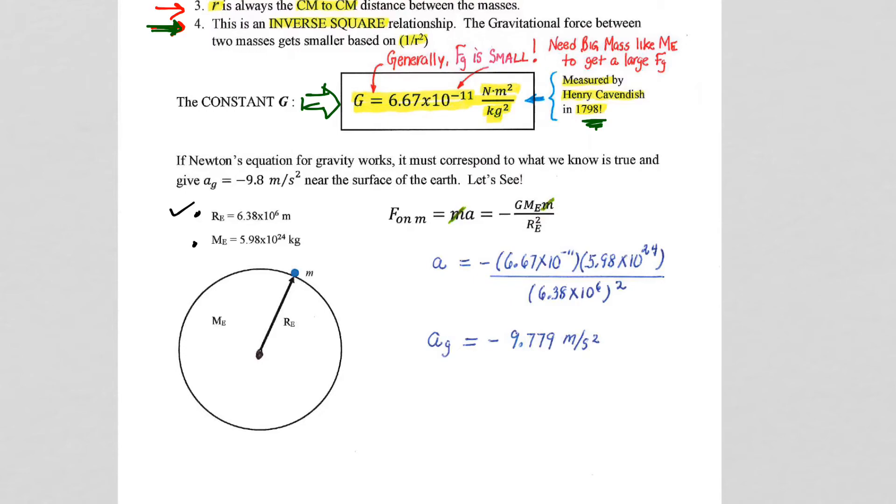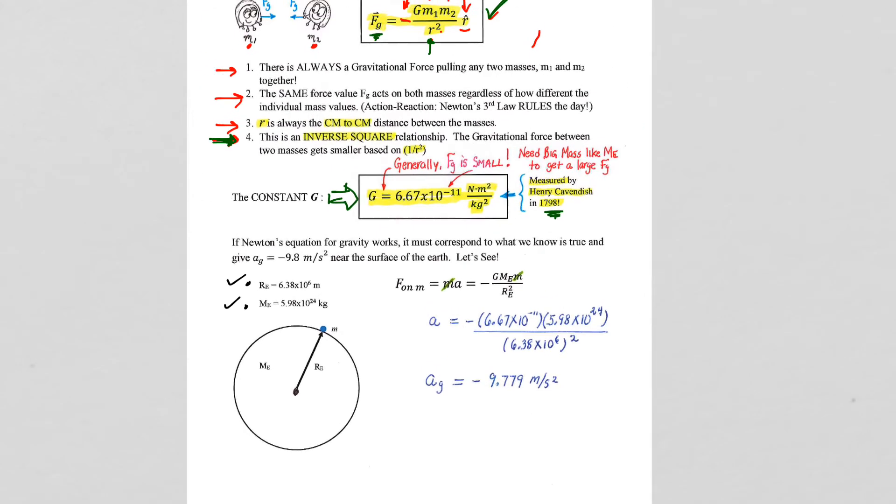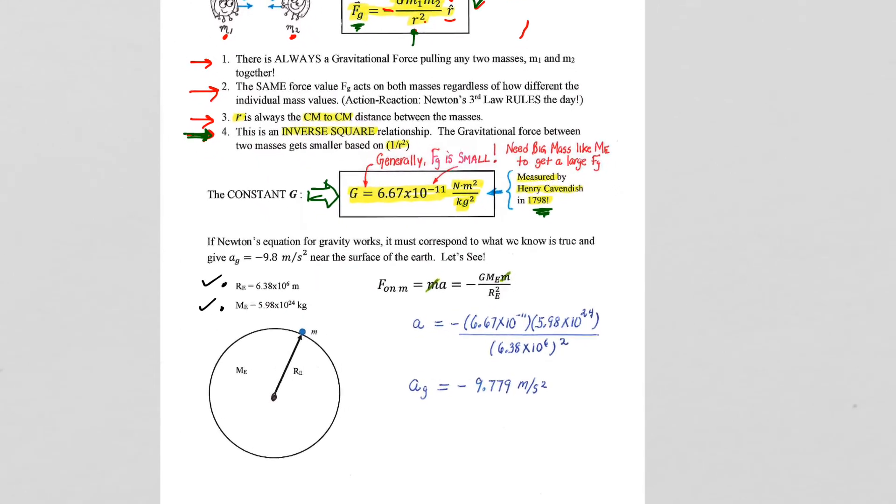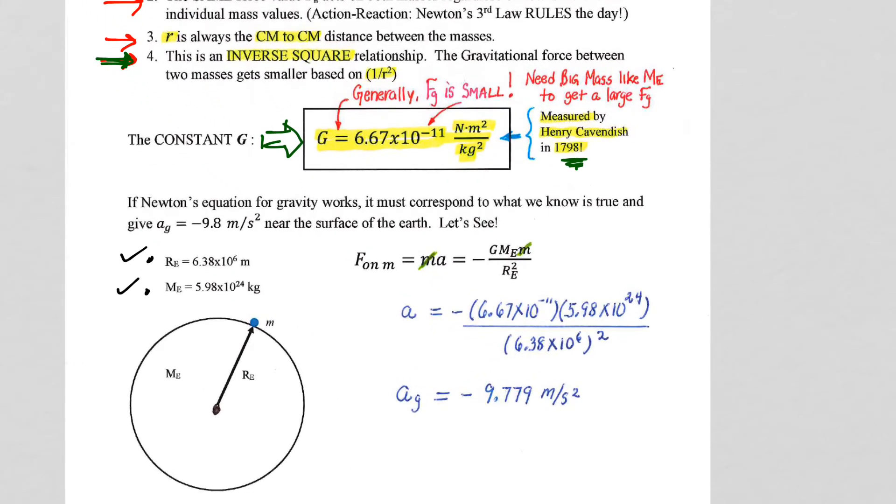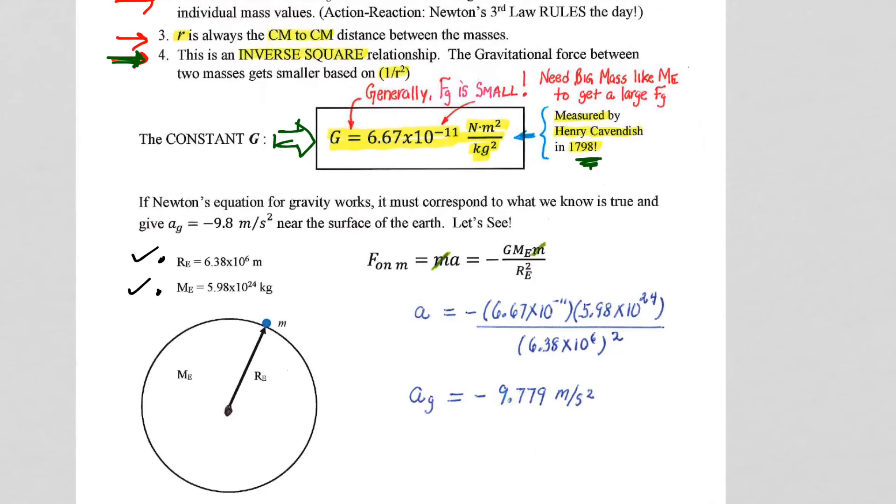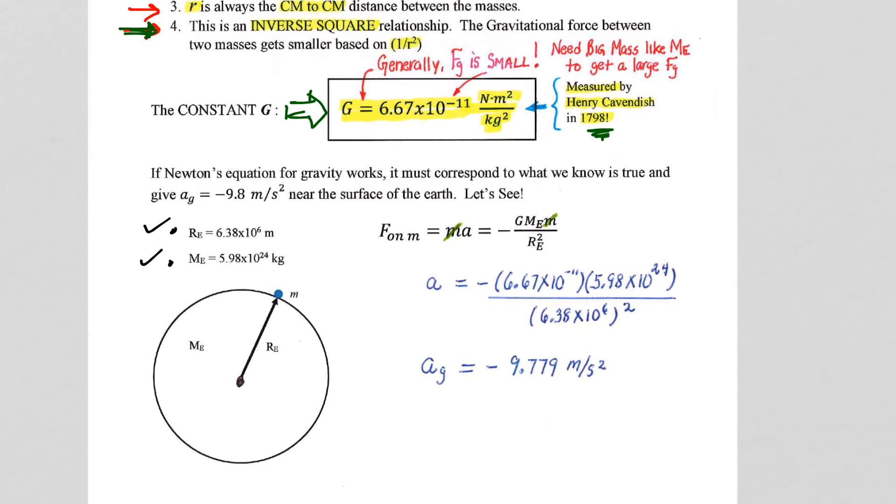The mass of the Earth, however, was not known, so Newton's mathematical proof was based on ratios, not the actual mass of the Earth, in terms of corresponding to the data that we had for the planets at the time. But if we look at the consistency of Newton's equation with what we know to be true here on Earth, we will see that that consistency is definitely in place, and please make sure that you get this into your notes.